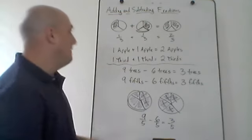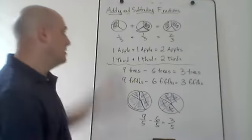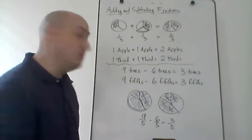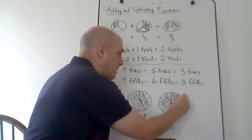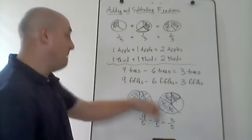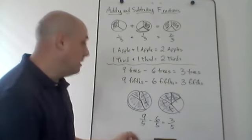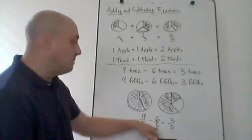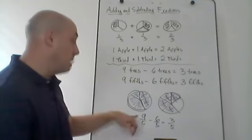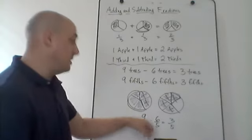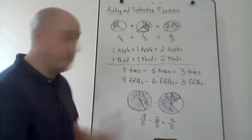You can think of a third as a physical thing — a third is this amount of a circle. If I have one-third plus one-third, I get two-thirds: two of those pieces of that circle, just like one apple plus one apple gives two apples. A fifth is a physical thing too. If I have nine-fifths and I take away six-fifths, I end up with three-fifths. When my denominators match — a common denominator — I just add or subtract the numerators, the numbers on top.